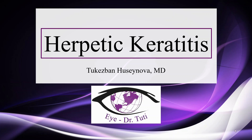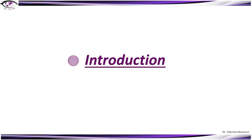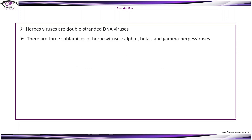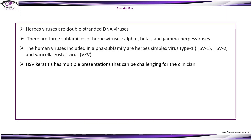Welcome back. Today's topic is Herpetic Keratitis. Let's start with the introduction. Herpes viruses are double-strain DNA viruses. There are three sub-families of herpes viruses: alpha, beta and gamma. The human viruses included in the alpha sub-family are herpes simplex virus type 1, type 2, and varicella zoster virus.